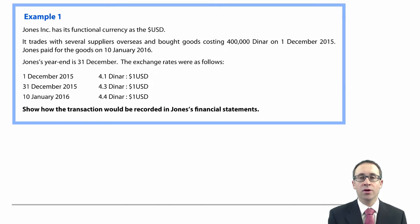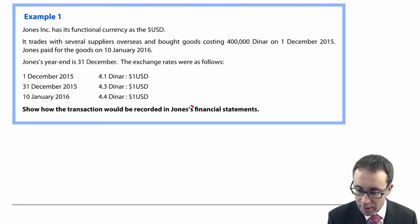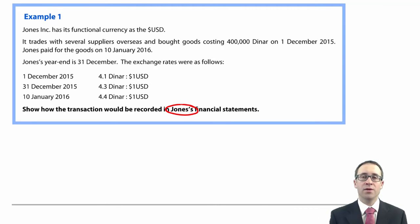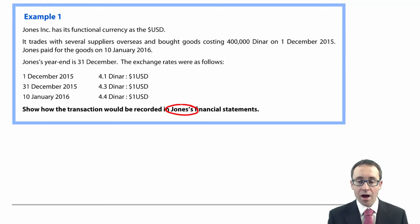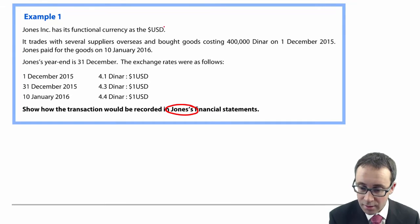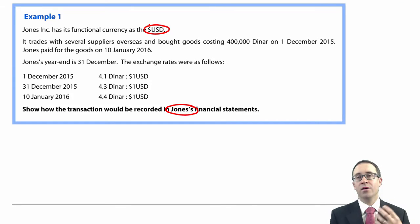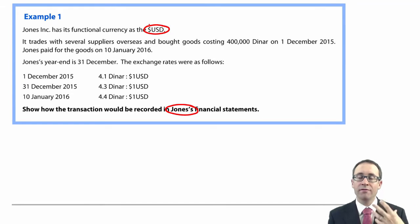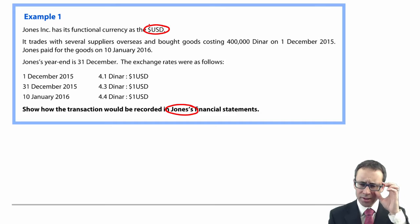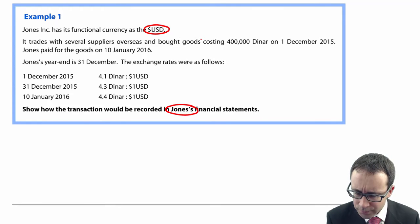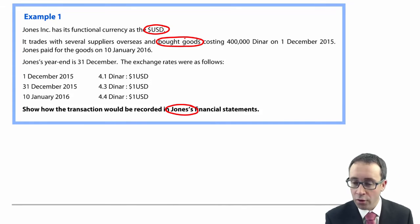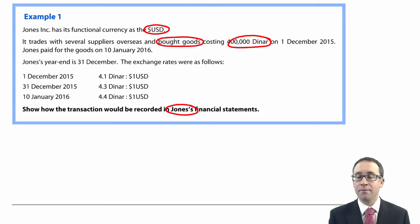Let's pull everything together with the first example regarding functional currency. We need to look at how this transaction will be recorded in Jones's financial statements — statements of profit or loss, statements of financial position, and if you wish, statements of cash flows. Jones Inc. has its functional currency of the US dollar, so all transactions must be translated into that functional currency. It trades with several overseas suppliers and bought goods — a purchase costing 400,000 dinar on the 1st of December 2015.